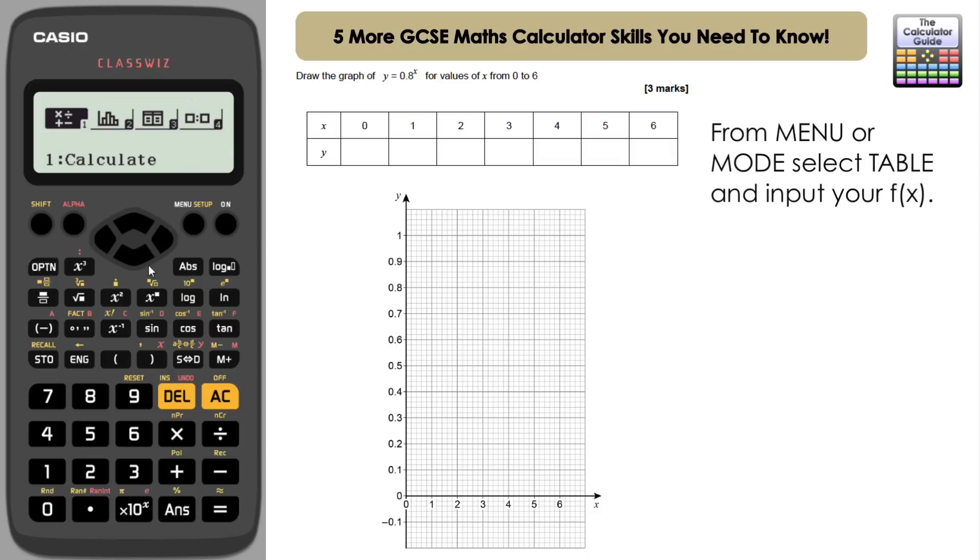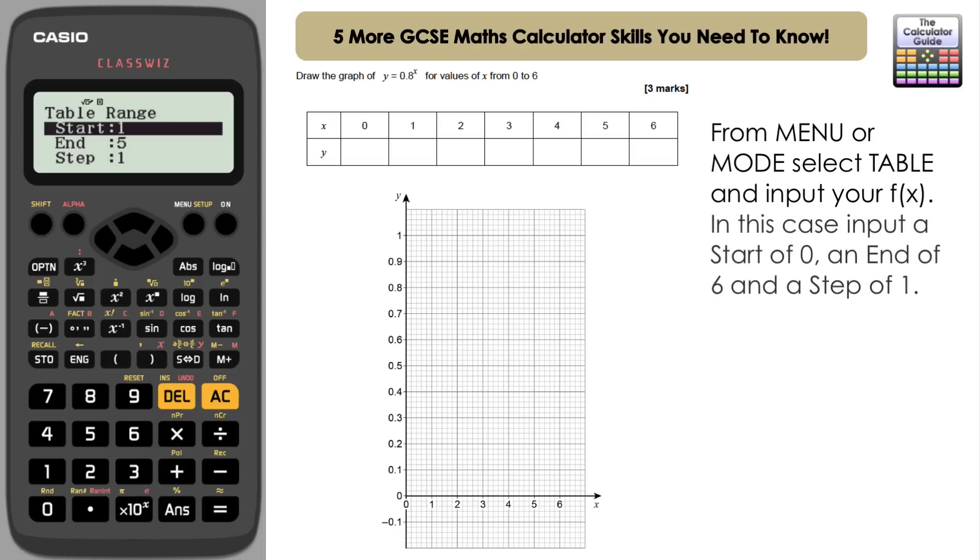If we go to table mode from the menu, it will prompt us to input our FX, so in this case a function of X, which is Y, is 0.8 to the power of X. So I'm just doing alpha and right bracket because that's what it will be on the FX-83 and 85 models. If you have the FX-991EX, there is a dedicated X button that you can use. Press equals. If you're prompted for G of X, this is on the ClassWiz models, we haven't got a G of X, so just press equals.